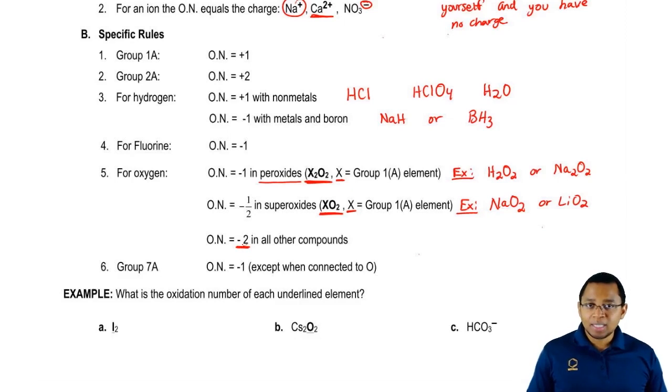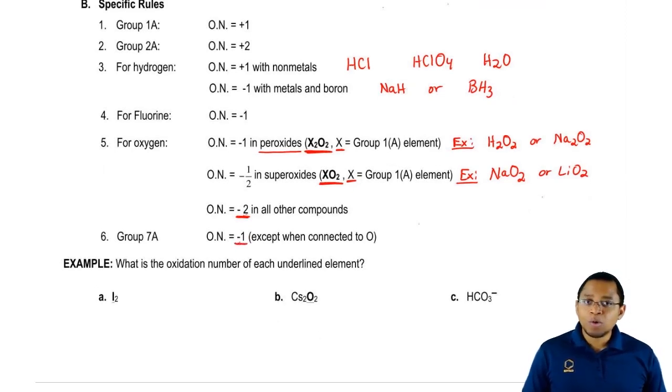Now group 7A elements are halogens. They're going to be minus one except when they're connected to oxygen. When they're connected to oxygen, we're going to have to use some mathematical knowledge, simple algebra. We'll get to see how this works when we do practice questions dealing with this concept. So remember, we have our two general rules and then we have our more specific rules.